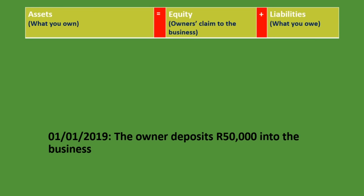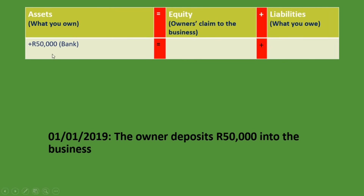So we put plus 50,000 rand under bank in assets, because cash in the bank is increasing. And we put plus 50,000 rand under capital in equity, because capital is also increasing. We can see that assets equals equity plus liabilities — we have 50,000 rand in assets and 50,000 rand in equity, with nothing in liabilities.